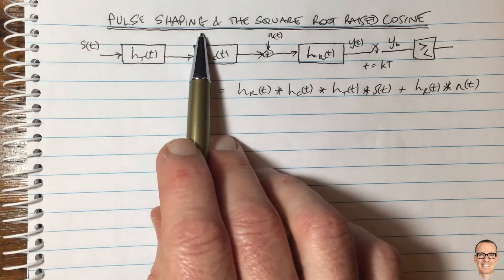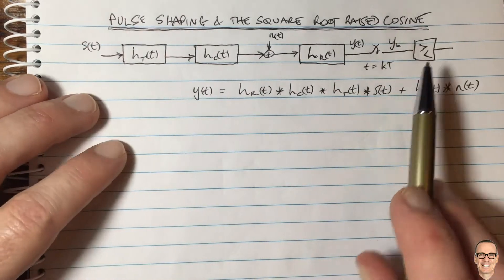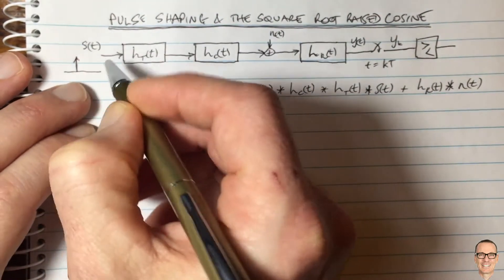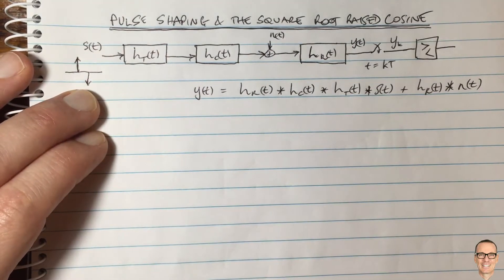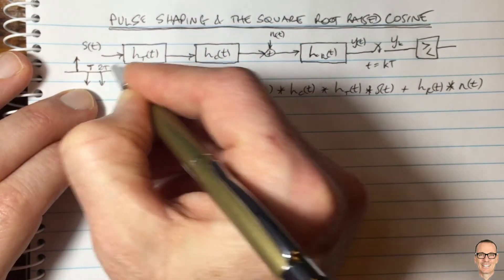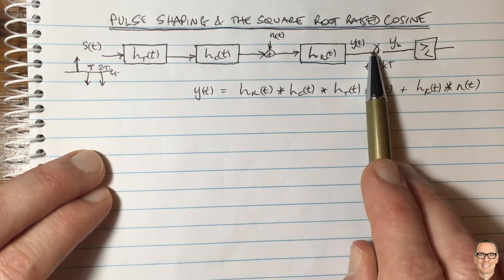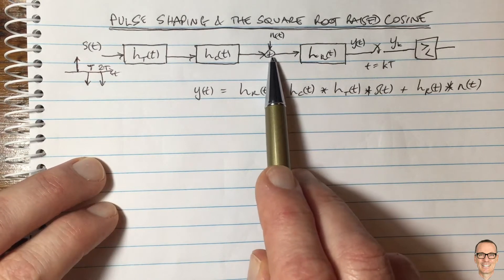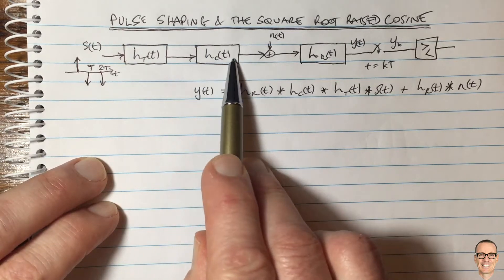Let's look at pulse shaping and ask: what is it, and what is the square root raised cosine? Here's a digital communication system where we input digital bits — in this case delta functions, positive for a one and negative for a zero, spaced T apart as the symbol period. There's a transmit filter, a channel, a receive filter, and then a decision is made at the receiver. Noise in the receiver is Gaussian noise.